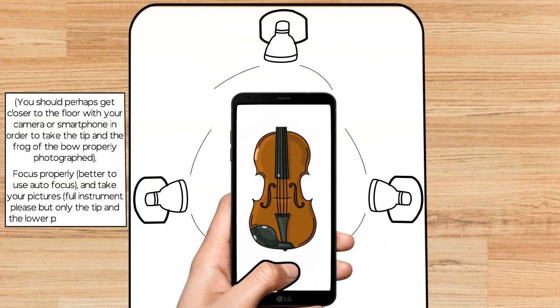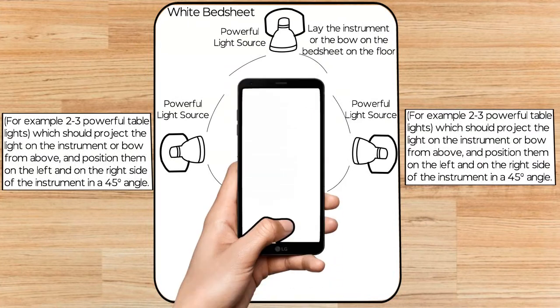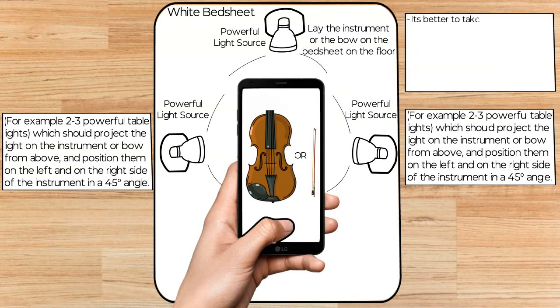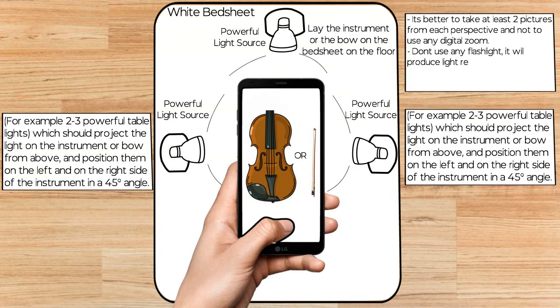For instruments, photograph the tip and the lower part of the bow. It's better to take at least two pictures from each perspective and not to use any digital zoom. Don't use any flashlight as it will produce light reflections and will alter the color of the varnish.